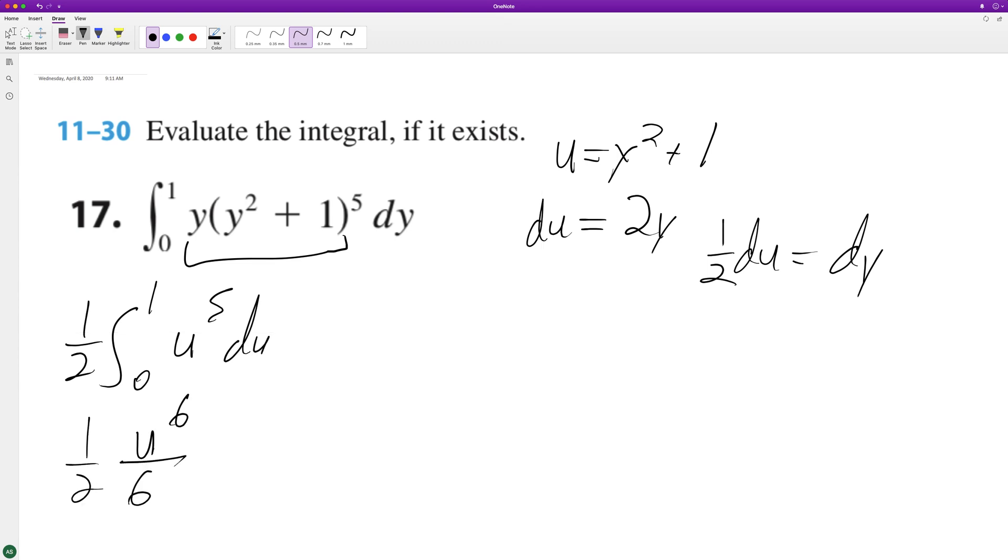So we're gonna have one half. This becomes u raised to the sixth divided by six, so it's gonna be u over twelve. So we substitute back in: y squared plus one raised to the sixth divided by twelve, zero to one.